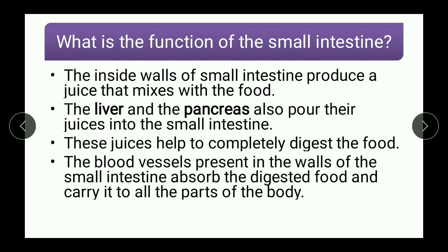So the function of the small intestine is: the walls of the small intestine produce juices that mix with the food. Also, glands like the liver and pancreas secrete juices and pour them into the small intestine. These juices help to completely digest the food. Then the blood vessels in the walls of the small intestine absorb this digested food and carry it to all parts of the body.